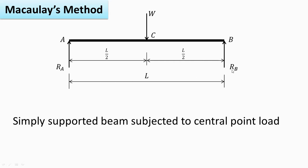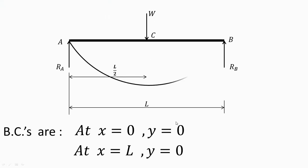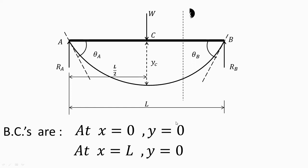Reactions Ra and Rb will be equal to W/2 as the load is acting centrally. Now we'll try to understand the concept of the elastic curve, then what is slope and what is deflection. Then we'll see what the boundary conditions are and how they can be used to solve the equations of slope and deflection and to find out the unknowns. Because of the load W there will be deflection of the beam, and whatever curve is obtained due to the deflection of the beam, this particular curve is known as the elastic curve.